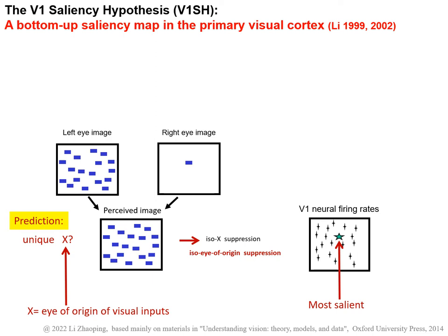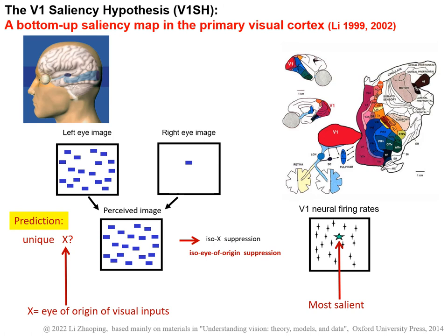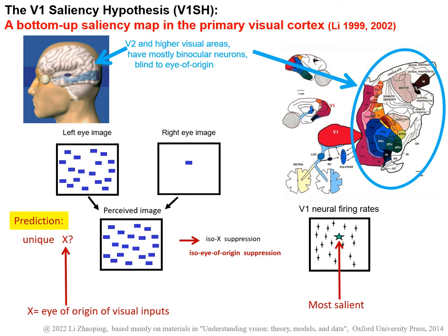The responsible V1 mechanism to make it salient is the iso-eye-of-origin suppression. This means V1 neurons tuned to the same eye of origin suppress each other, so that the V1 neuron responding to this unique bar escapes such suppression and therefore gives a relatively higher response. Such iso-eye-of-origin suppression is indeed present in V1. However, this saliency mechanism is not present in cortical areas V2 or above, downstream from V1 along the visual pathway, because these higher brain areas have mostly binocular cells. So their neural responses are insensitive to whether a visual input is to the left eye or right eye — they are blind to eye of origin of visual inputs.